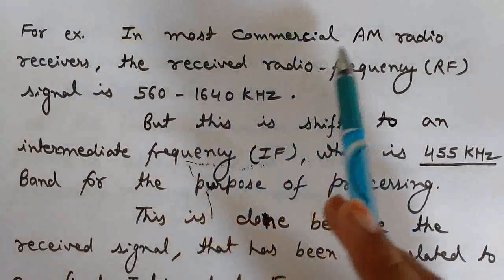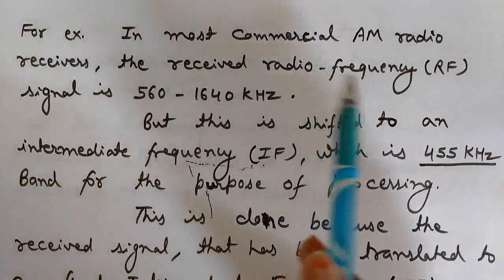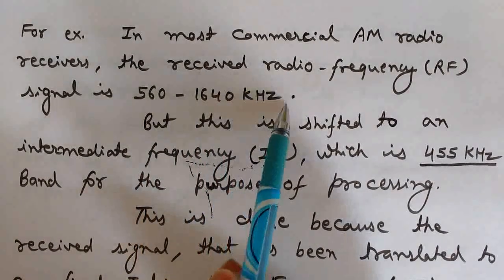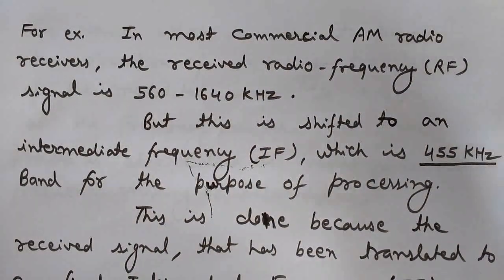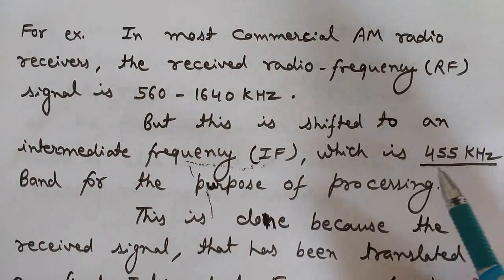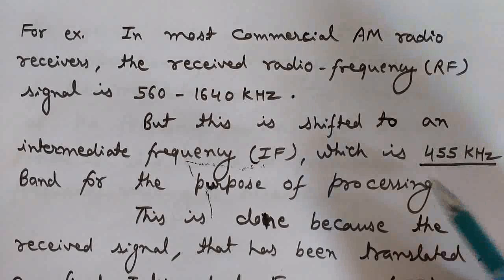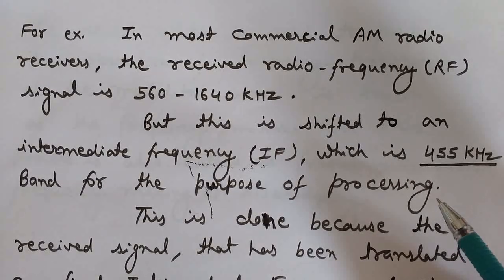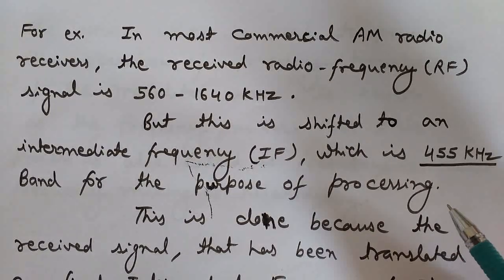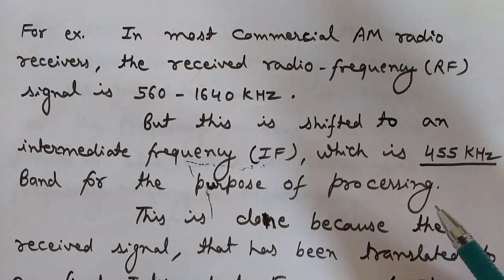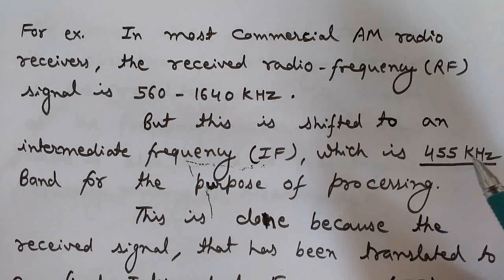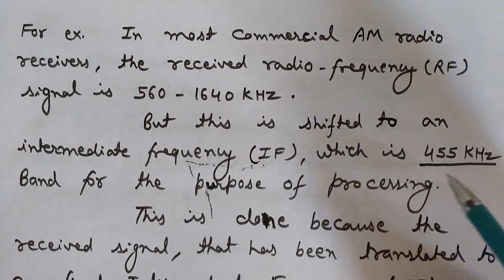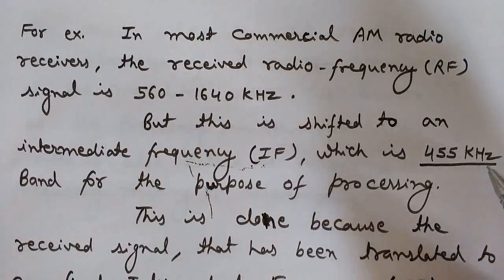For example, in most commercial AM radio receivers, the received radio frequency (RF) signal is in the range of 560 to 1640 kilohertz. This is now shifted to an intermediate frequency (IF) of 455 kilohertz. It is shifted to this fixed intermediate frequency band for the purpose of processing — as processing of signals like filtering, amplification, and demodulation becomes easy at a fixed IF.